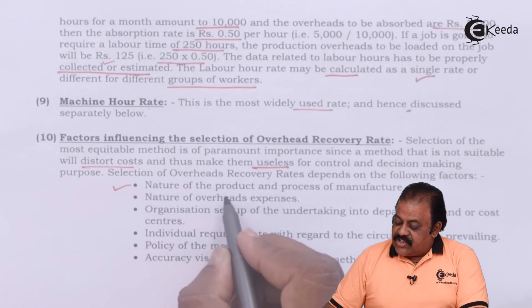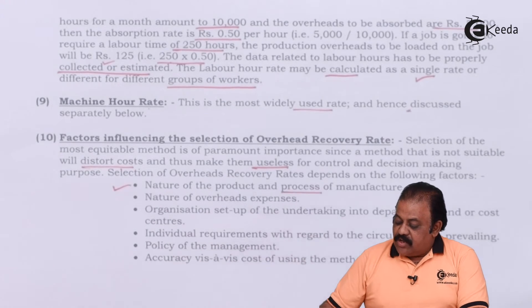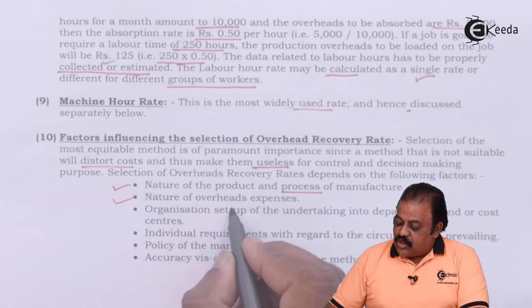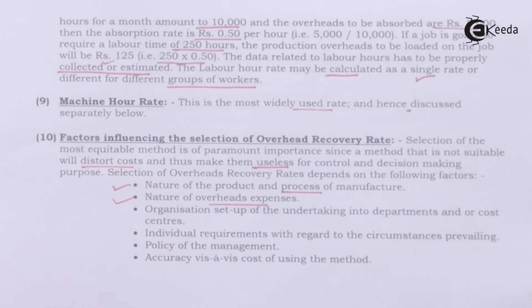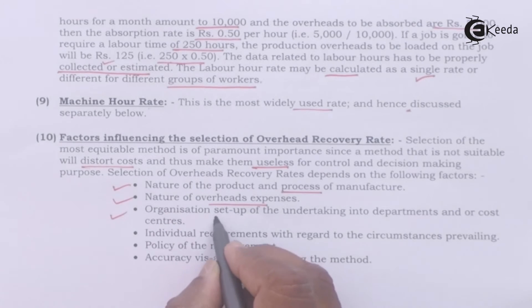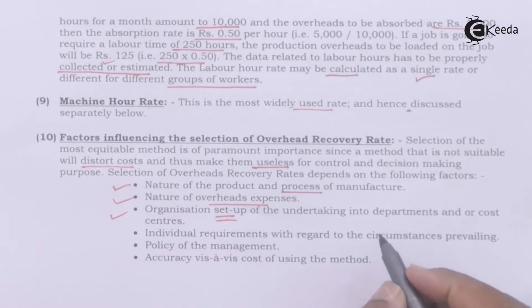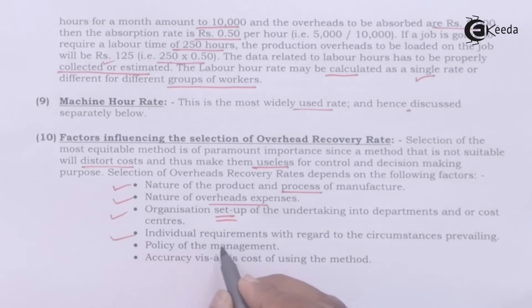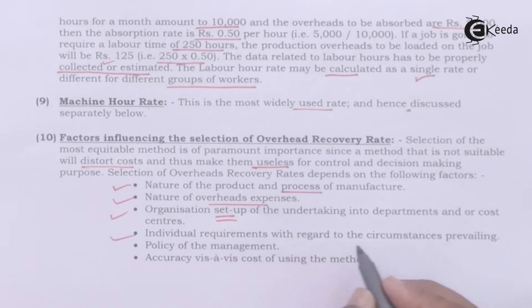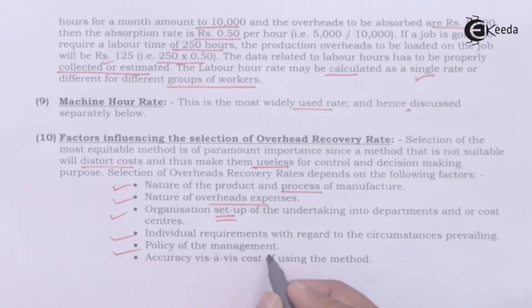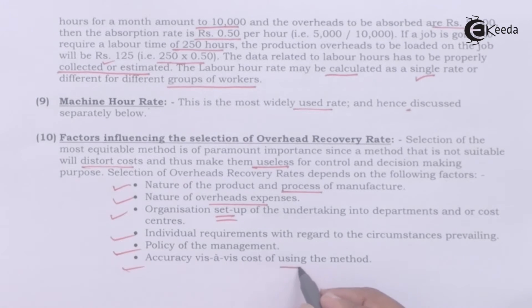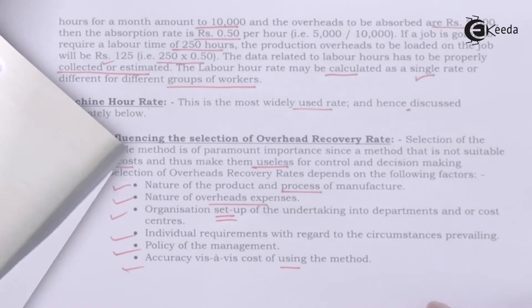Selection of overhead recovery rate depends on the following factors: nature of product and process of manufacture; nature of overhead expenses; organization setup of the undertaking into departments or cost centers; and individual requirements with regard to circumstances prevailing, management policy, accuracy, and cost of using the method.